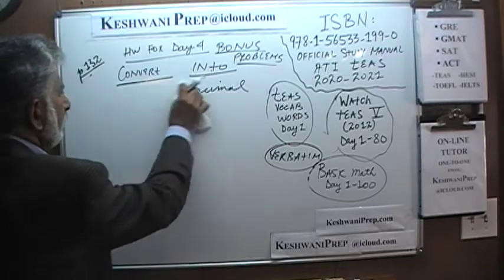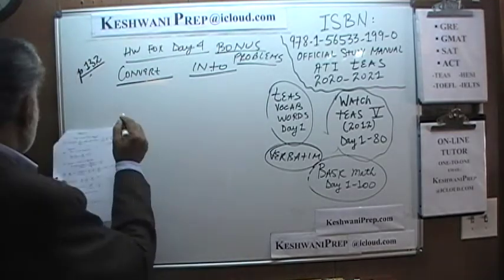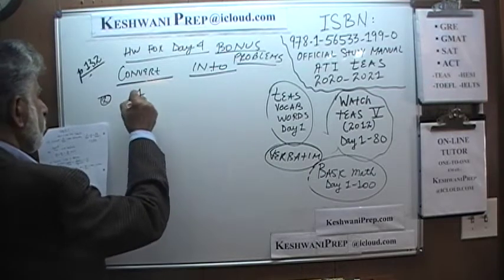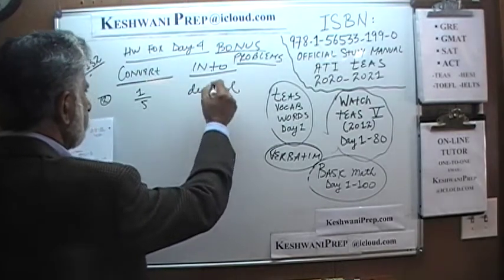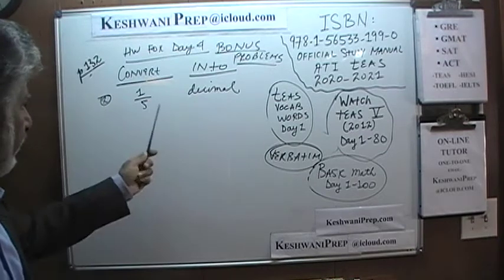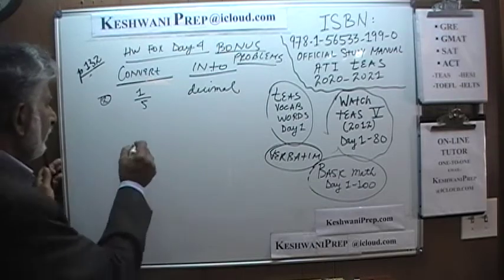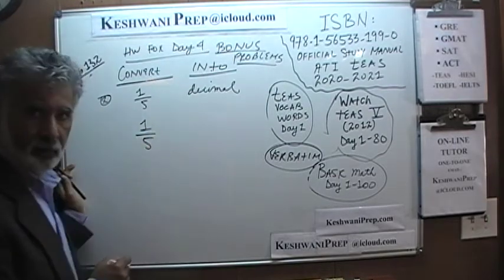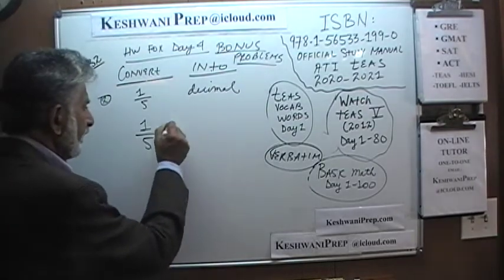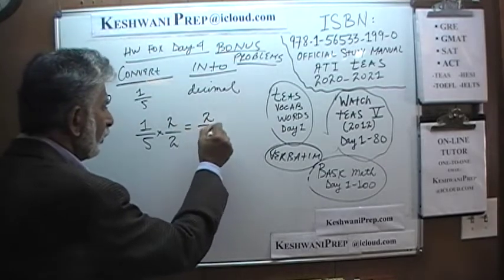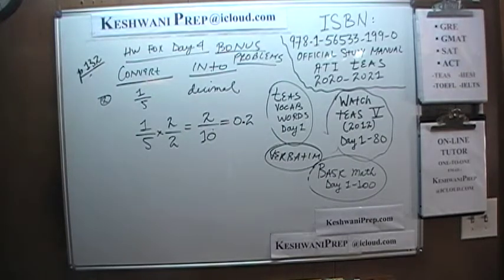Number 2: convert 1 fifth into decimal. Since we are converting to decimal, let's convert the bottom into a 10. What can we multiply 5 by to make it 10? The answer is 2. Multiply top and bottom by 2 and we end up with 2 over 10, which is simply 0.2.